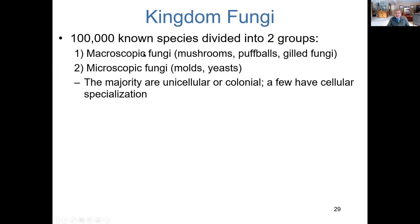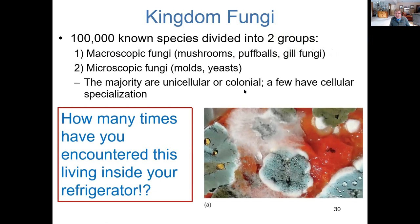A lot of fungi are microscopic — yeasts, for example, are so tiny you need a microscope. Some molds you can find in your refrigerator or on the shower curtain. The majority are unicellular or colonial. Yeasts are unicellular; molds tend to be colonial, as we'll see. Opening a jar of forgotten spaghetti sauce after a couple of weeks, you'll see beautiful arrays of greens, yellows, blues — fuzzy stuff. Even in a cold refrigerator, with enough time and nutrients, suitable growing conditions for fungi can develop.